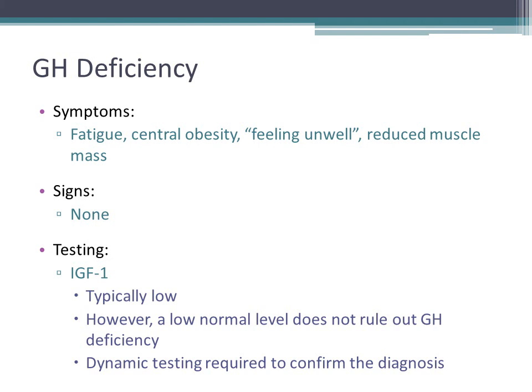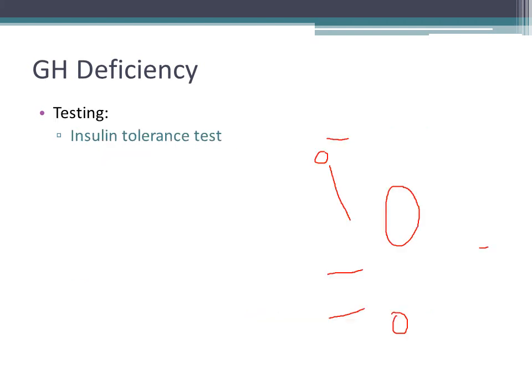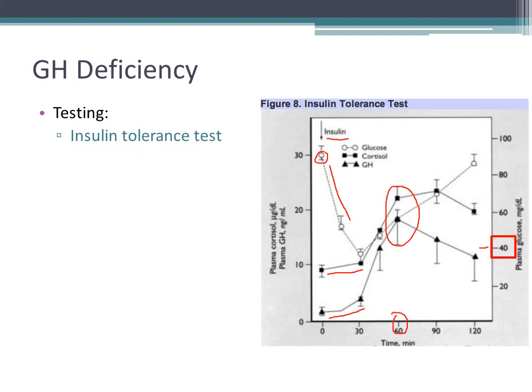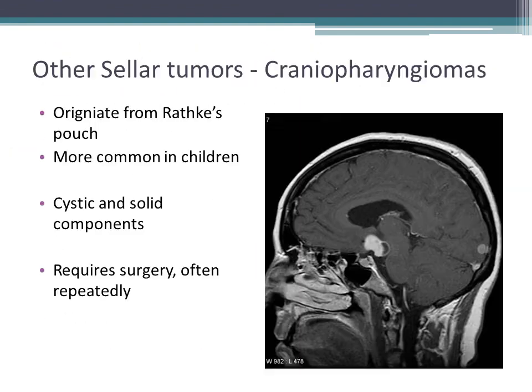Dynamic testing for growth hormone deficiency uses the insulin tolerance test as the gold standard, as described previously. This is an example of the insulin tolerance test.